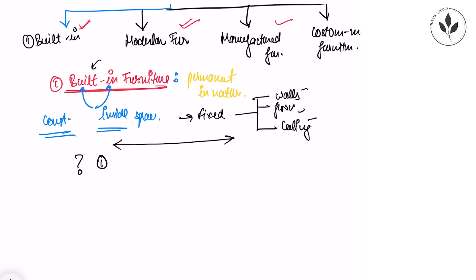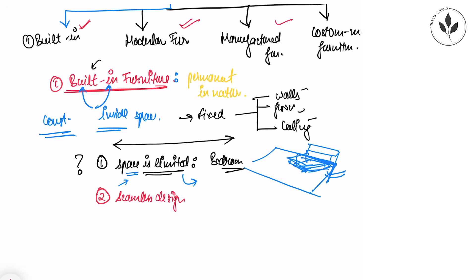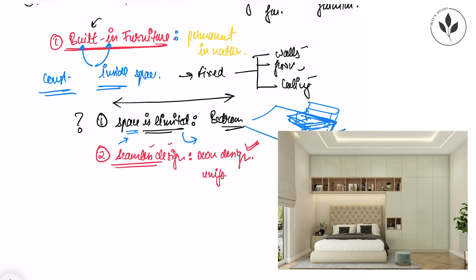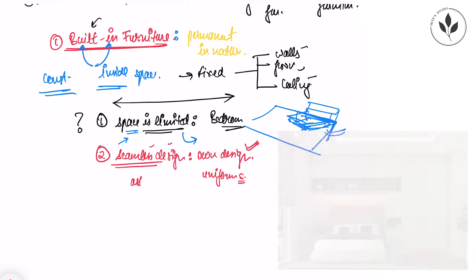Built-in furniture is used in areas where space is limited. To maximize utilization — like in studio apartments or bedrooms where we have very little space — if we go to the market for ready-made furniture it might not fit. If you want a seamless design, you can give your own design, select your own material, and it can go in uniformity with your other furniture inside your building, making your aesthetic more integrated and uniform.